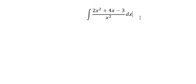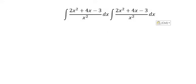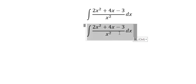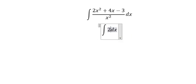We have a fraction with x² in the numerator and x² in the denominator. In this situation, we simplify by dividing each term by x². We have 2x² over x²...